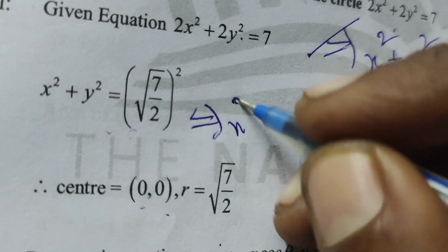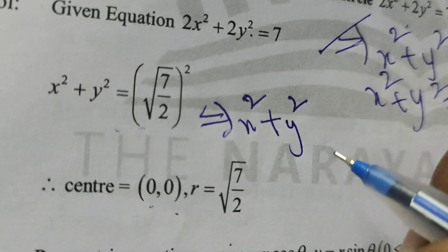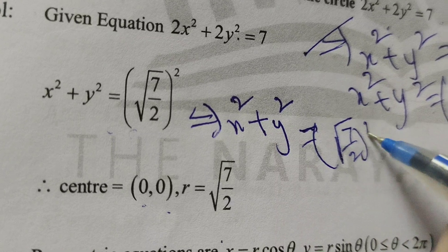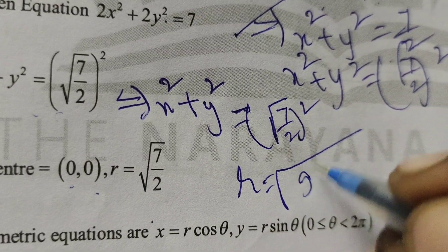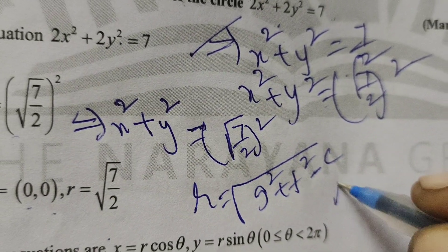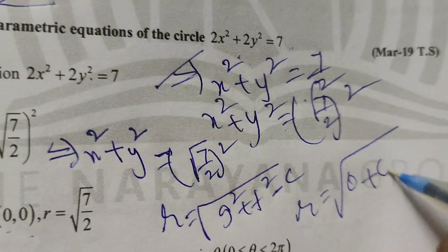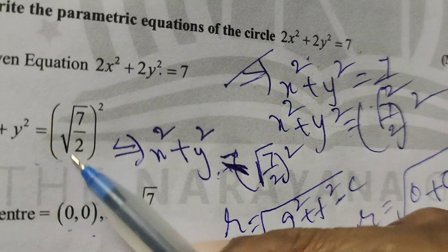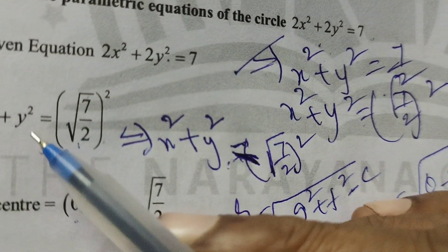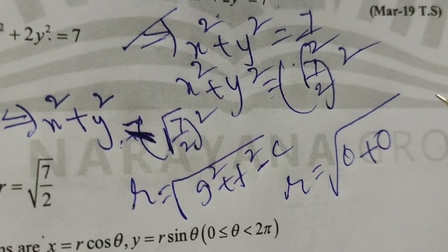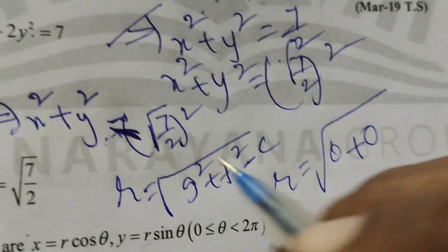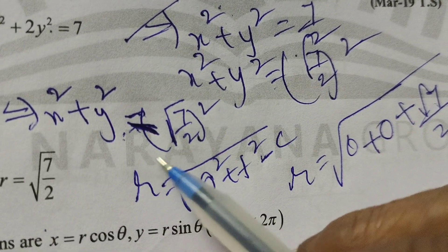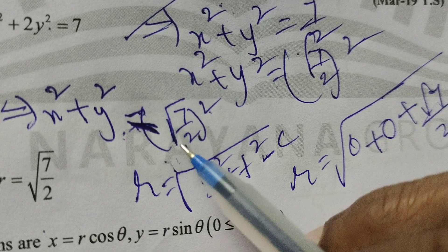That is, x squared plus y squared equals root of 7 by 2, whole square. The formula for radius is: r equals root of g squared plus f squared minus c. Therefore, r equals root of 0 plus 0 minus c. Transposing, r squared equals root of 7 by 2, whole square, so r equals root of 7 by 2.